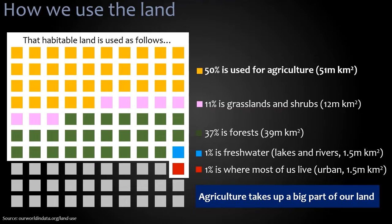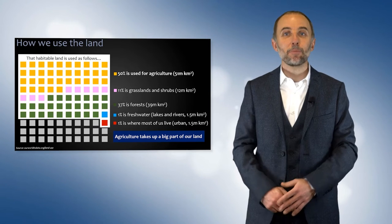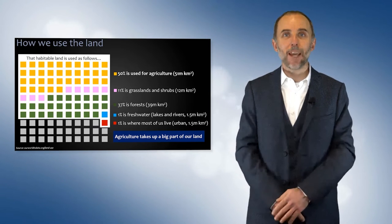Of the remaining habitable land, 37% is forest, 11% is grassland, 1% is fresh water — our rivers and lakes — and 1% is where most of us live. So agriculture takes up a very large part of our land.